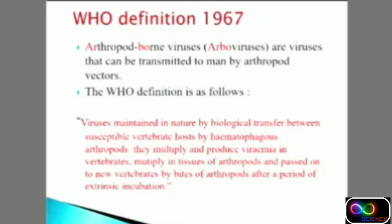The arthropod bites the person, takes a blood meal, and the virus multiplies producing viremia in the vertebrate. The virus also multiplies in the tissues of the arthropod and is then passed on to new vertebrates through subsequent bites after some incubation period, which is known as the extrinsic incubation period.